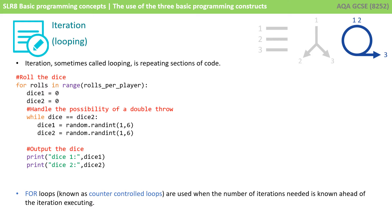A for loop is known as a counter-controlled loop, and we use this when the number of iterations needed is known ahead of the iteration executing. For example, here we're saying for roles in range roles per player. And if roles per player was 9, it would be for roles in range 9. So we know the number of times we want to execute or iterate, repeat this code.